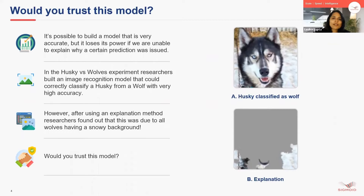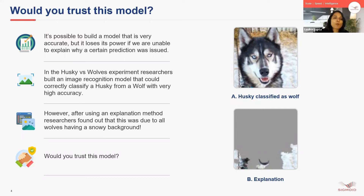Let's go through an example where I'll explain how a bias got introduced. Researchers created an image recognition model where they were trying to differentiate between husky and wolf images. This model had great accuracy. But when the researchers did more research, they found out that all the images for wolves being introduced had a snow background. So when an image of a husky with a snow background was introduced, it actually predicted it as a wolf. Would you trust such a model? Since there are chances that a modeler might make some mistake or a possible bias could get introduced, and we are using these ML models to make very important decisions, we need to have a proper understanding of how they work.